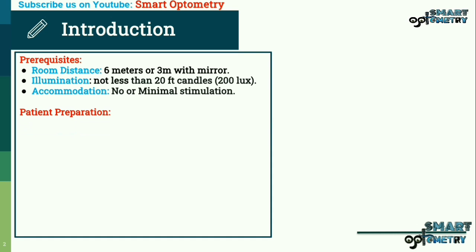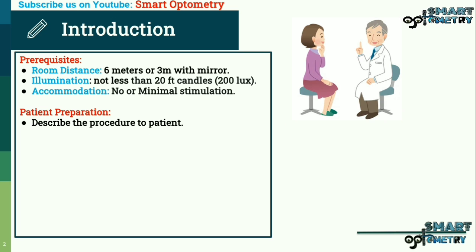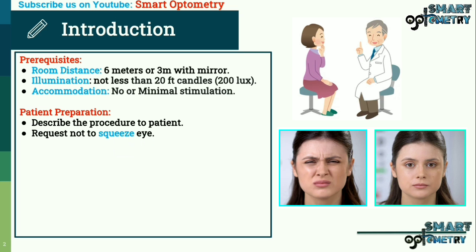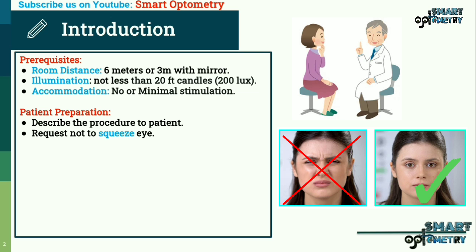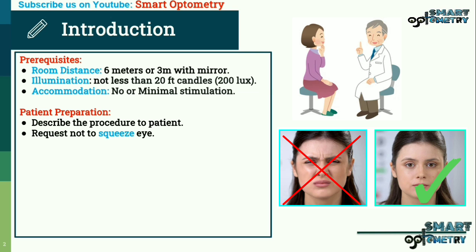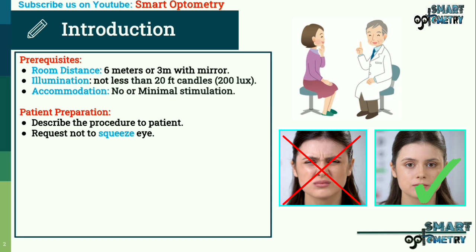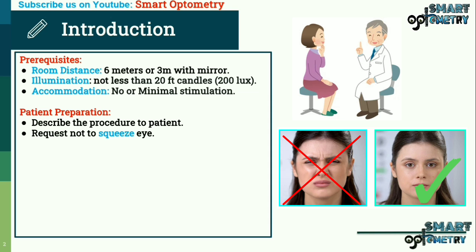Regarding patient preparation: first, describe the procedure to the patient. Second, request that they do not squeeze their eye. If the patient squeezes their eye during visual acuity measurement, their vision will improve because they are blocking peripheral rays — improving vision in spherical refractive errors like myopia or hypermetropia — and the eyelid creates a stenopic slit effect which improves vision in astigmatism, making measurement inaccurate.